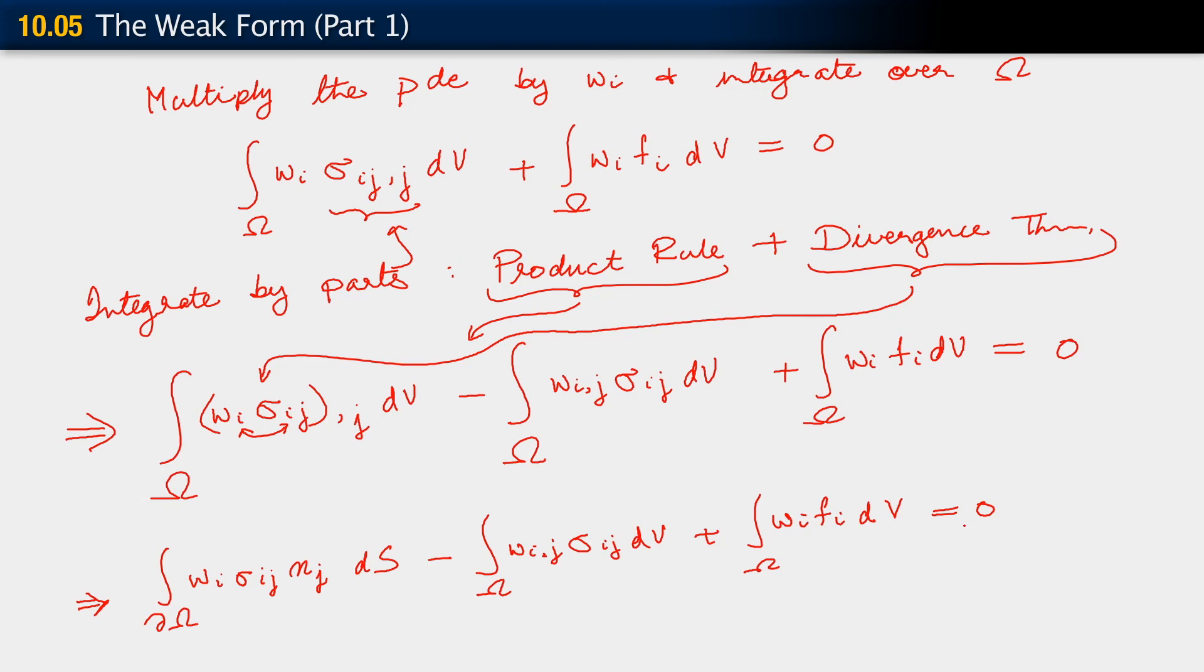What we get is integral over the boundary w_i sigma_ij n_j dS minus w_i,j sigma_ij dV plus integral over omega w_i f_i dV equals 0. What we're going to do now is rearrange things a little. I'm going to move this term with the negative sign to the other side.